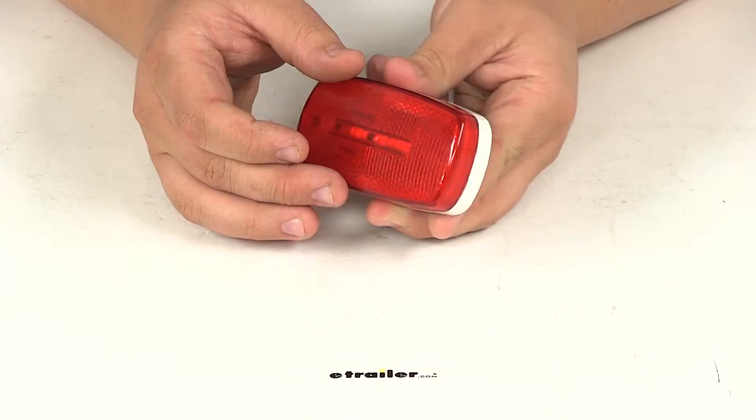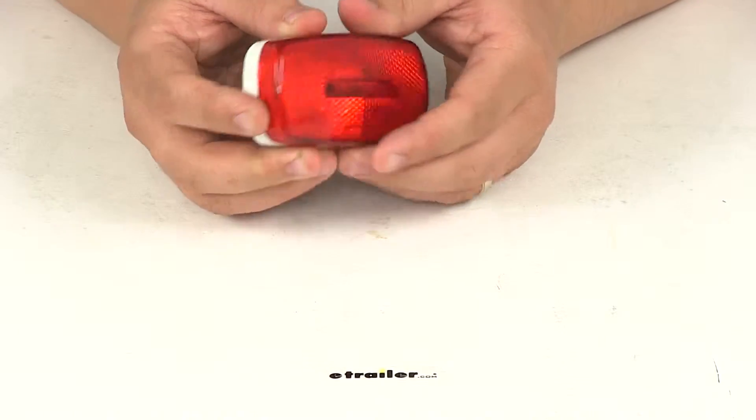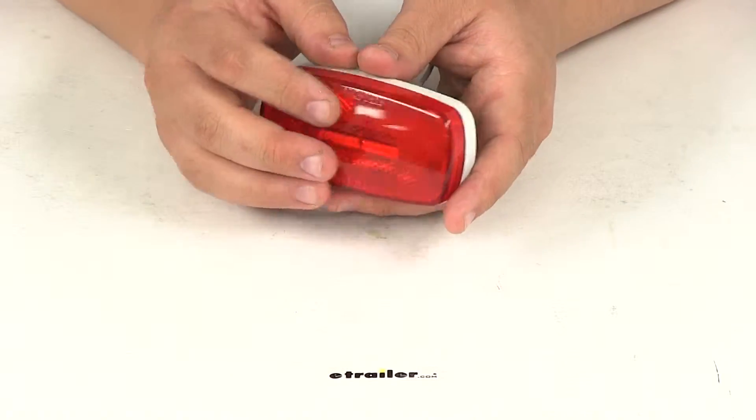Now the lens is a snap-on lens made from an acrylic material. It's very easily replaceable if it does ever break. We offer replacements here on our website.